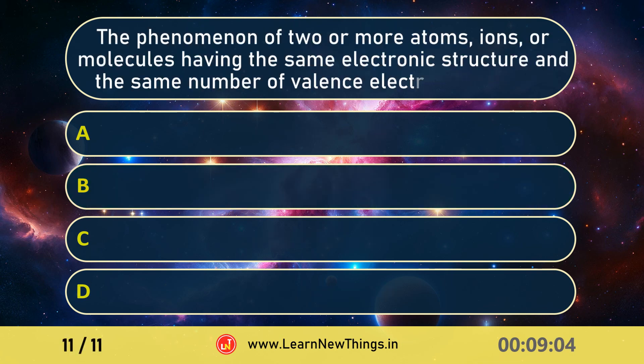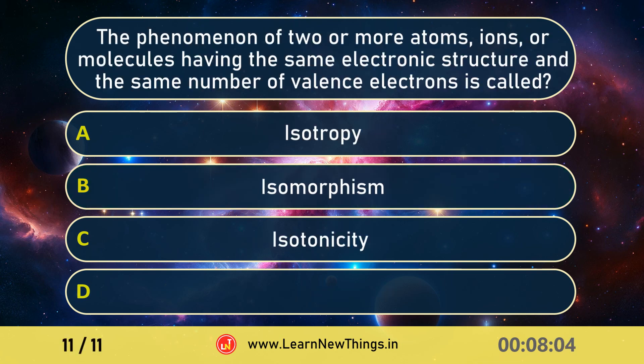The phenomenon of two or more atoms, ions or molecules having the same electronic structure and the same number of valence electrons is called isoelectronic species.